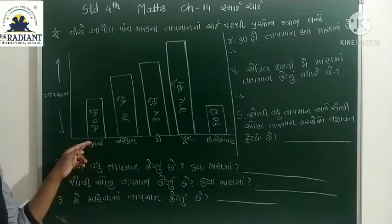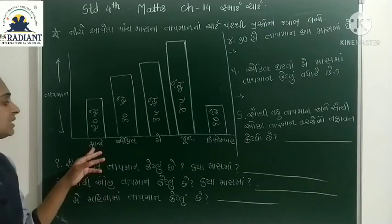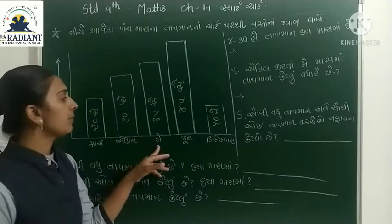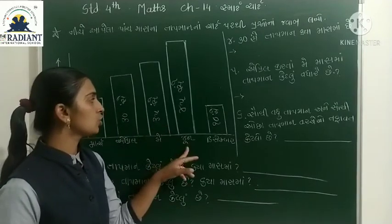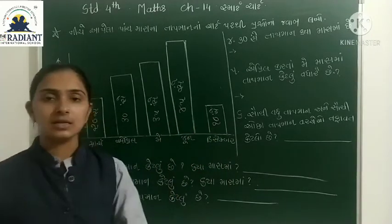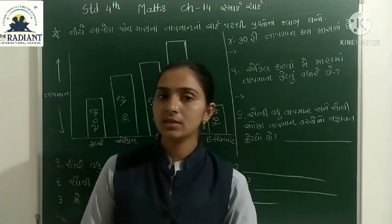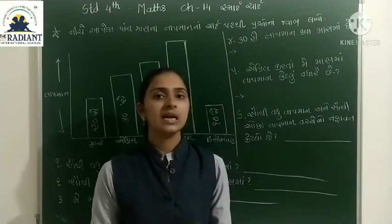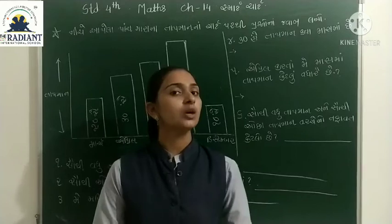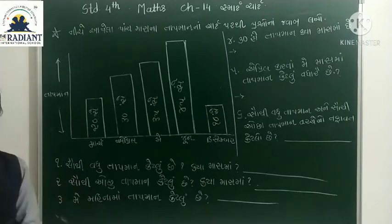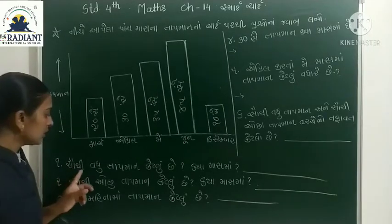આ તાપમાનનો ચાર્ટ છે. જાન્યુઆરી મહિનામાં તાપમાન ત્રીસ છે. એપ્રિલ મહિનામાં તાપમાન ત્રીસ છે. મે મહિનામાં તાપમાન ત્રીસ છે. જૂન મહિનામાં તાપમાન ત્રીસ છે. અને ડિસેમ્બર મહિનાનું તાપમાન. ચાલો, પ્રશ્નોના જવાબ આપીએ.